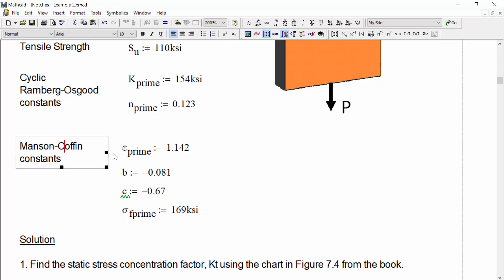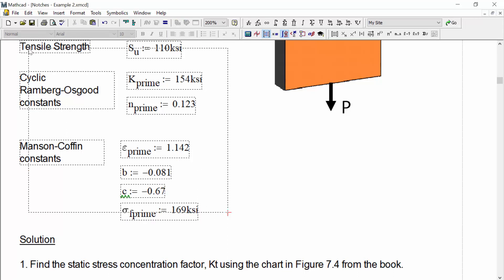And we're given the Manson-Coffin constants: eta prime at 1.142, B which is equal to negative 0.081, and C which is equal to negative 0.67. And we have a sigma F prime of 169 kSI. So we have all of our properties.